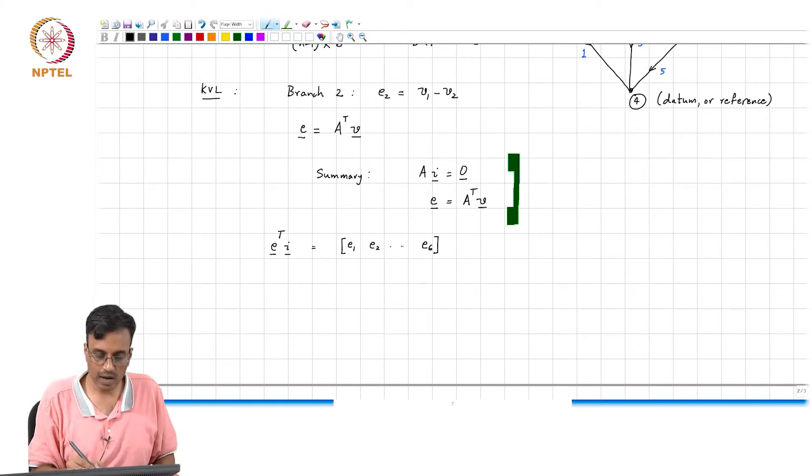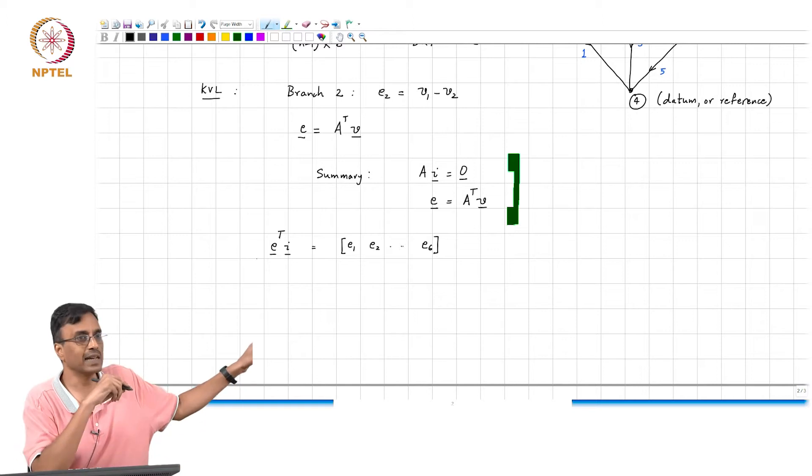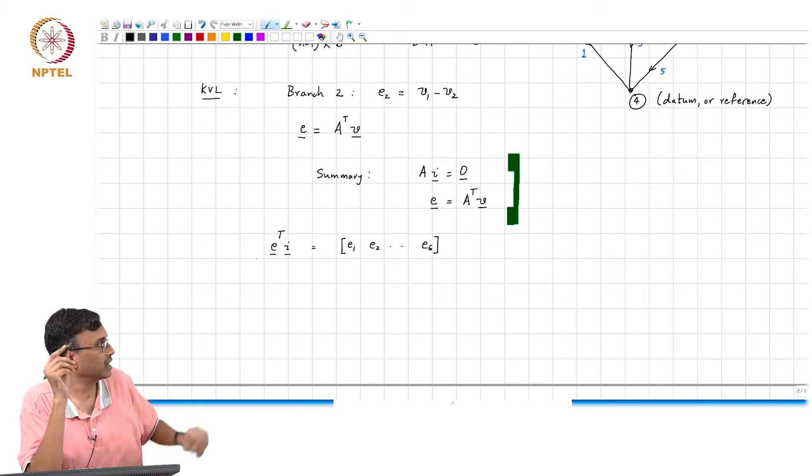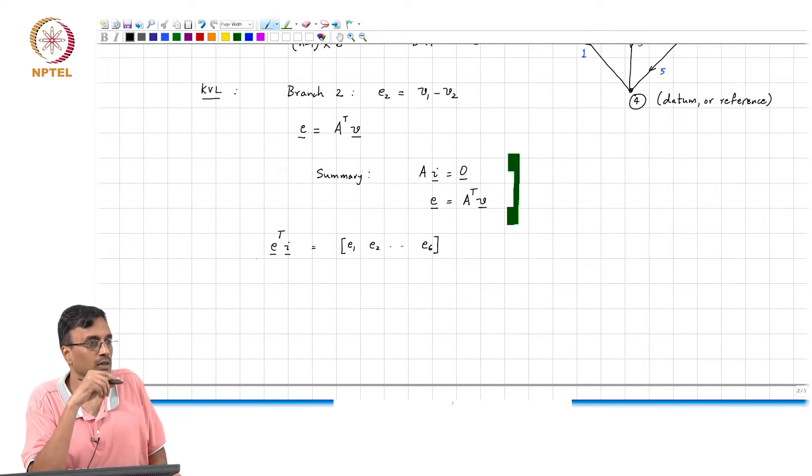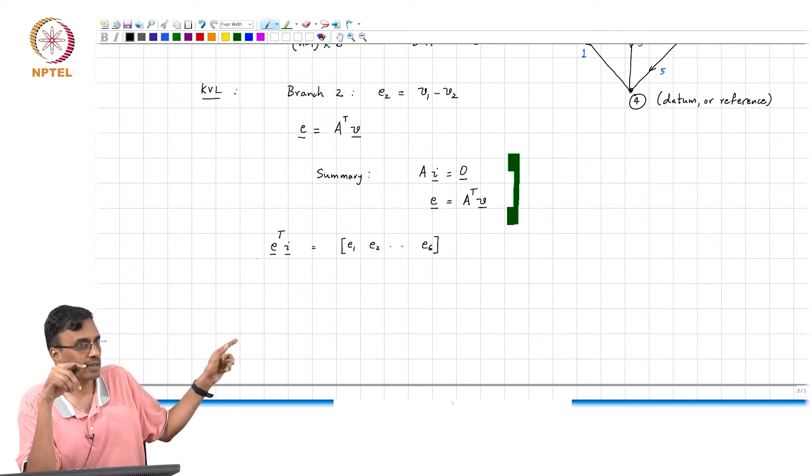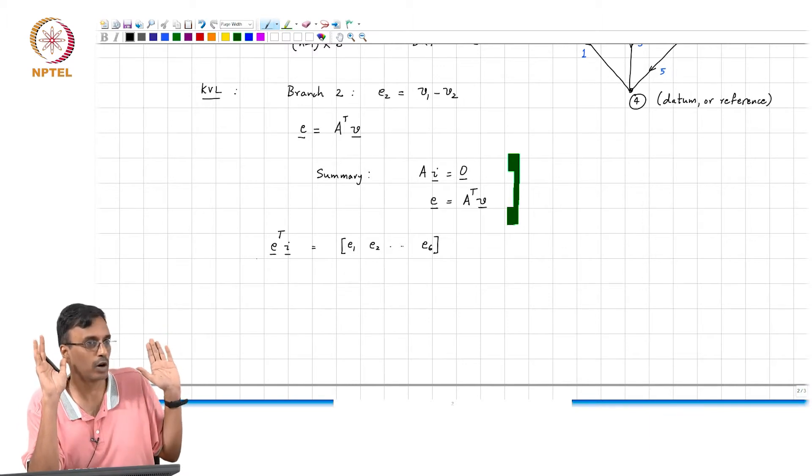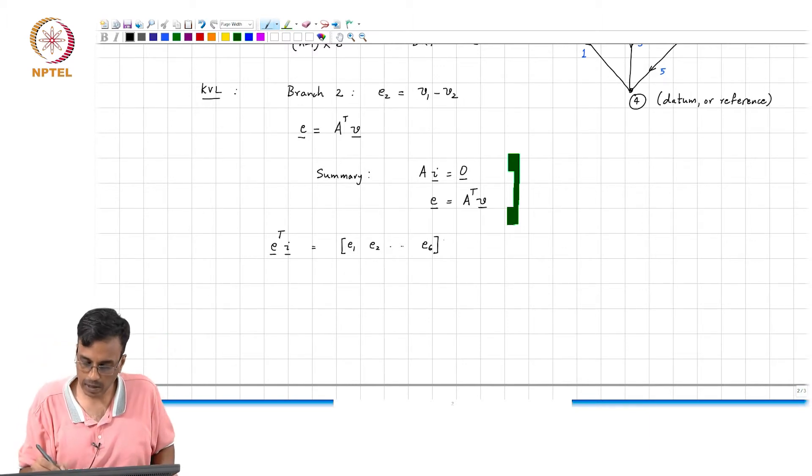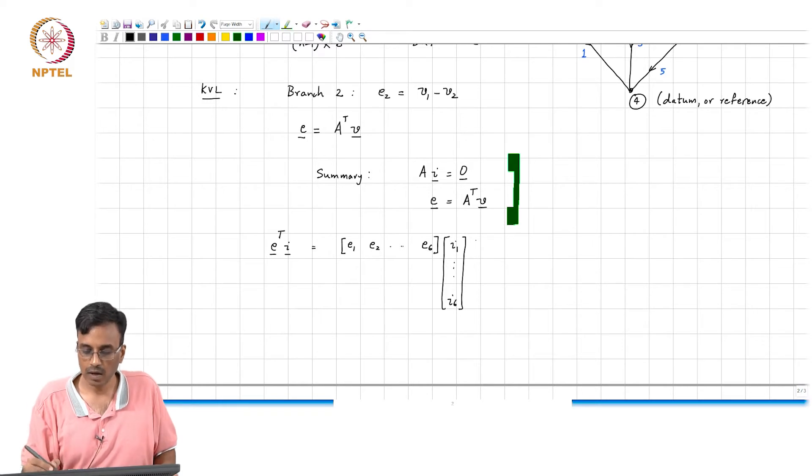First of all, is this product legal? What is the size of E transpose? 1 by 6. I is 6 by 1. So the product is legal. That is simply this multiplied by I1 all the way to I6. And so, this is nothing but sigma over k, Ek times Ik.